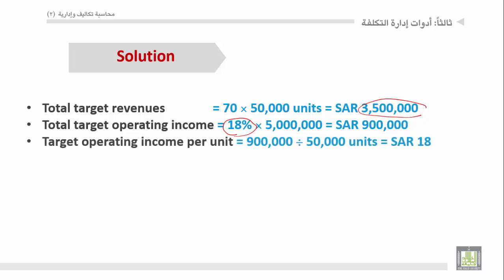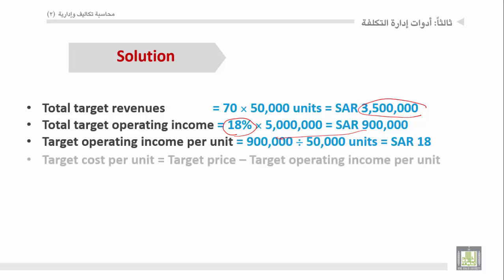Target operating income per unit: 900,000 ÷ 50,000 units = 18 SR للواحدة. Target cost per unit = Target price − Target operating income per unit = 70 − 18 = 52 S.R.